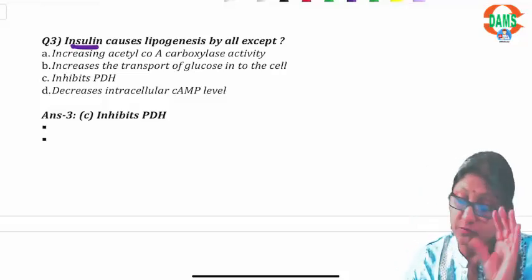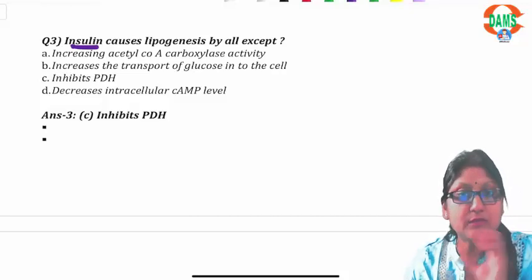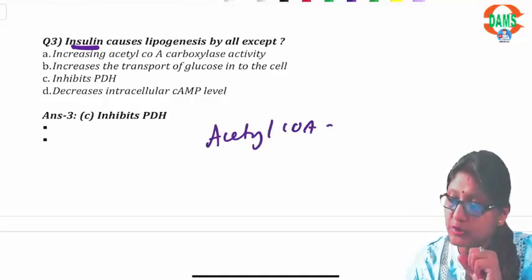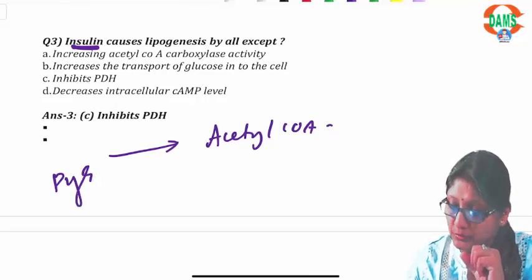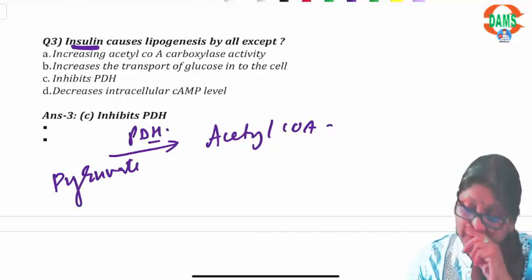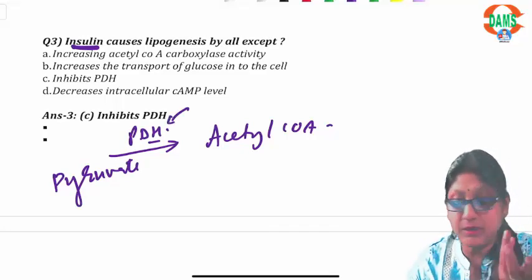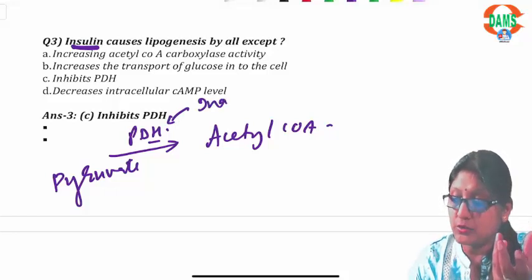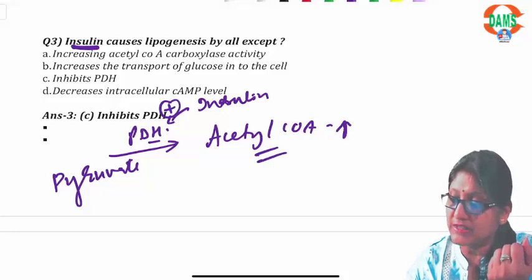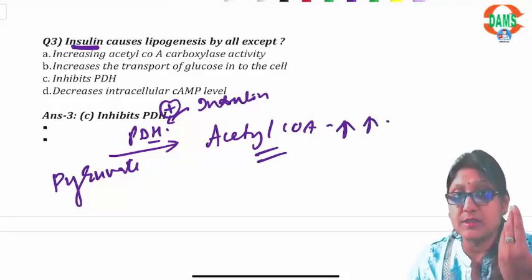Insulin is very important for making fatty acids and cholesterol. A lot of acetyl-CoA is needed, produced from pyruvate in the presence of PDH complex activity. When insulin is present, PDH complex is dephosphorylated and PDH is active. So insulin activates PDH to maintain the supply of acetyl-CoA going toward lipogenesis.